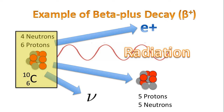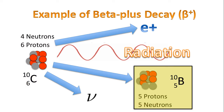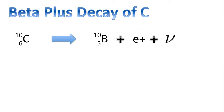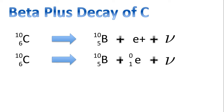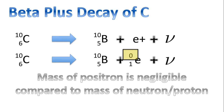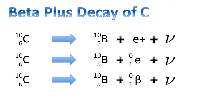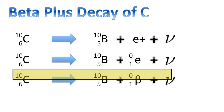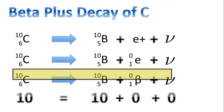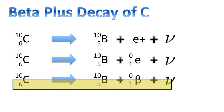The nucleus is carbon-10,6, and this decays to boron-10,5. The beta plus decay can be represented with an equation where zero is written for the positron's mass — it's extremely small in comparison to the mass of the neutron and proton — and 1 represents the charge of the positron, identical to the charge of a proton. You may also see this written with the symbol beta. Notice: 10 equals 10 plus zero plus zero, and 6 equals 5 plus 1 plus zero.